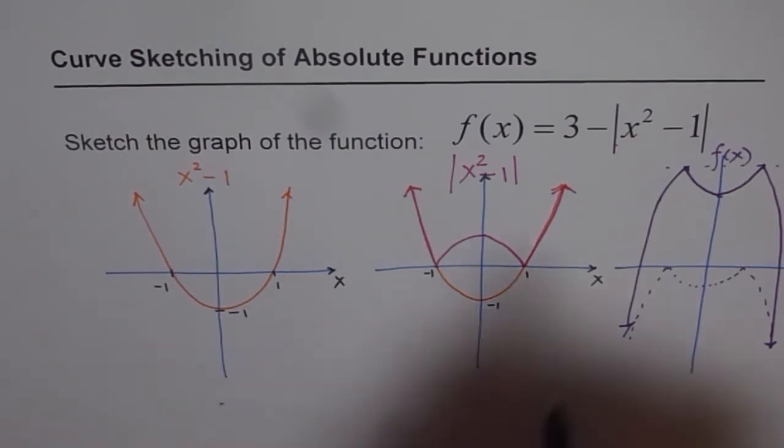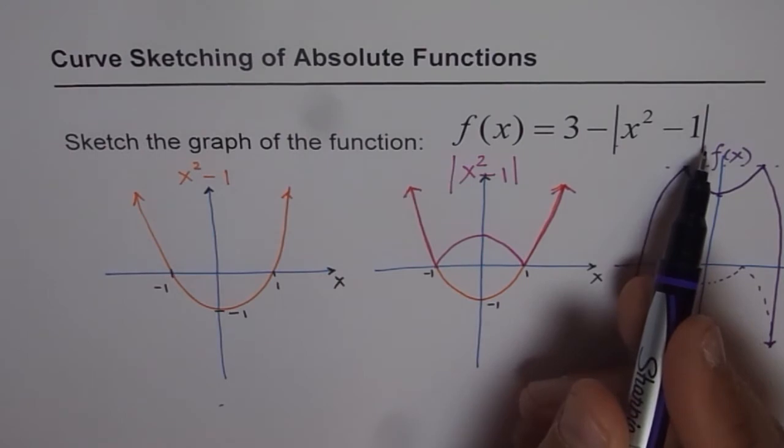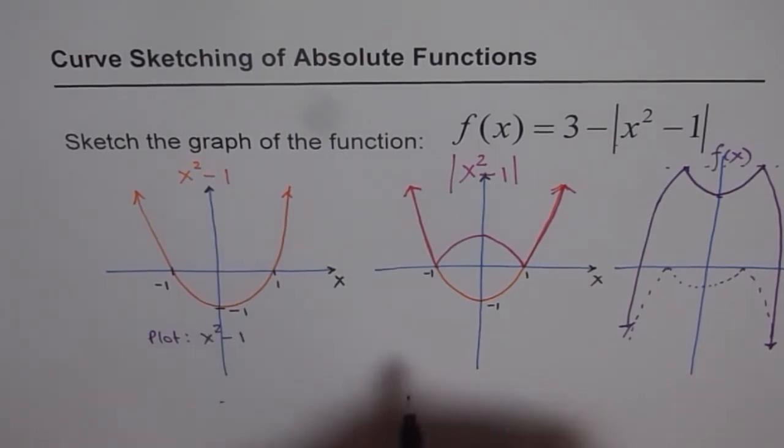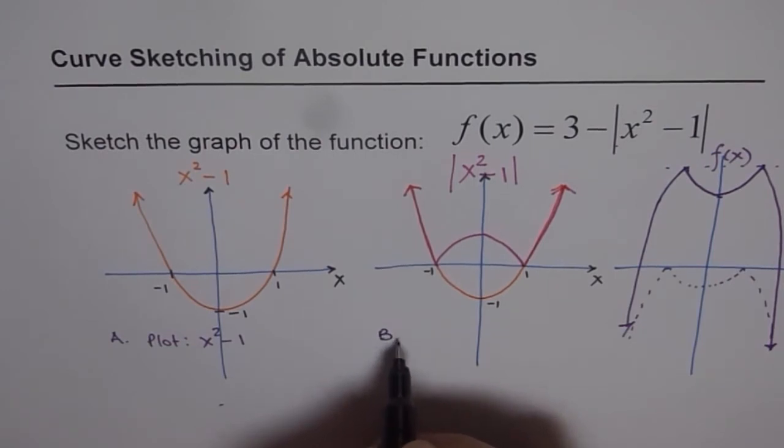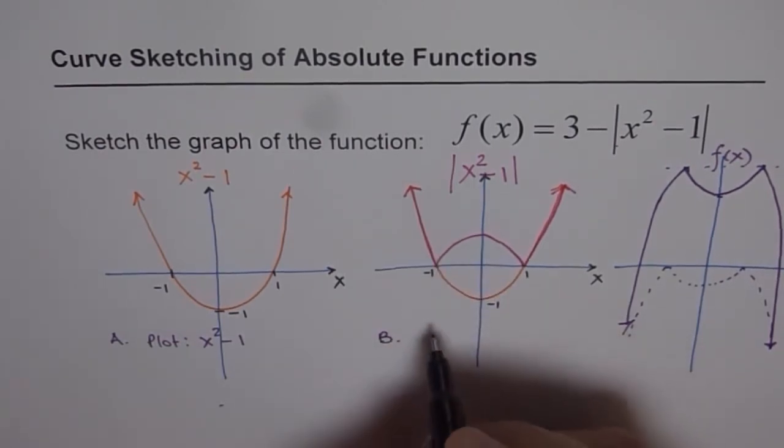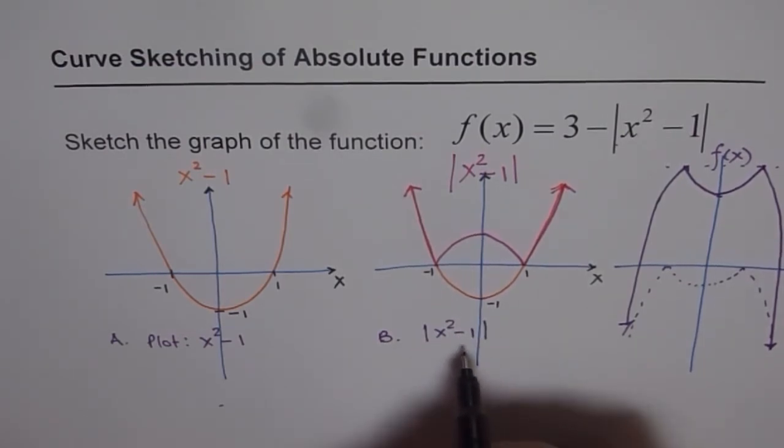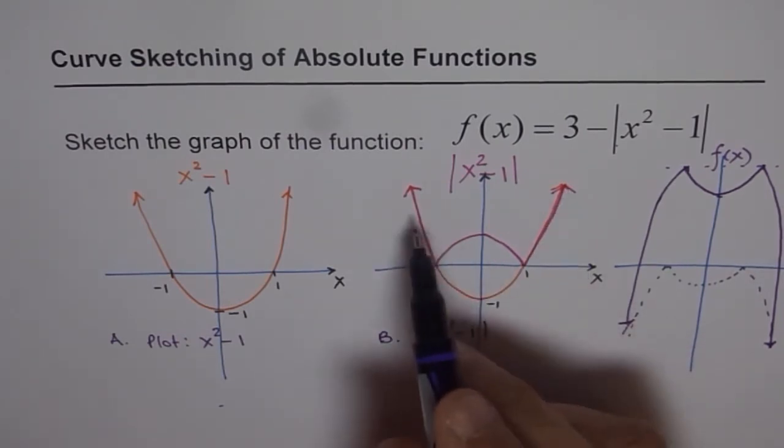So in step 1, plot x squared minus 1. That is the first step. And then you do absolute. So first you plot x squared minus 1. That is step A. And step B is you do absolute of x squared minus 1. And that is to say that you make all negatives as positives, and keep positive as such.